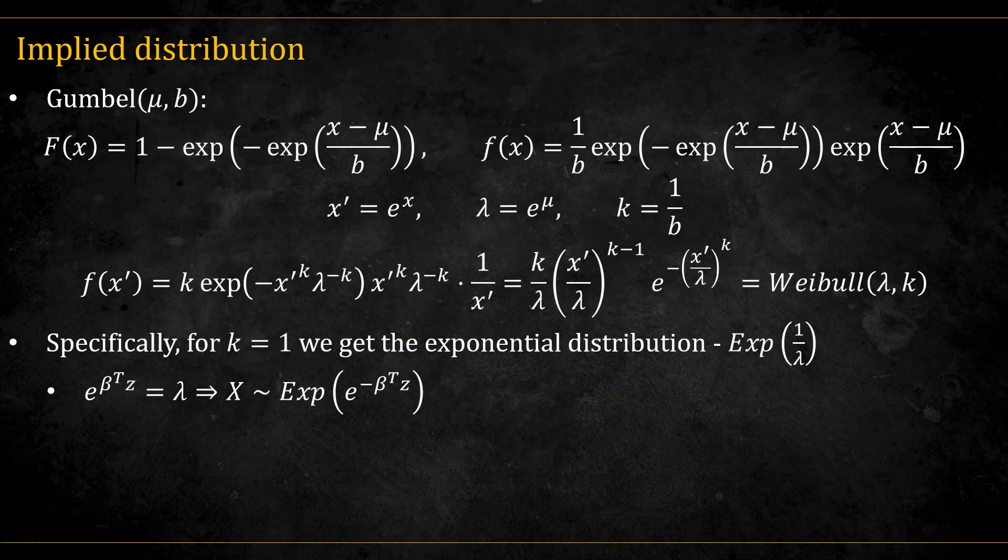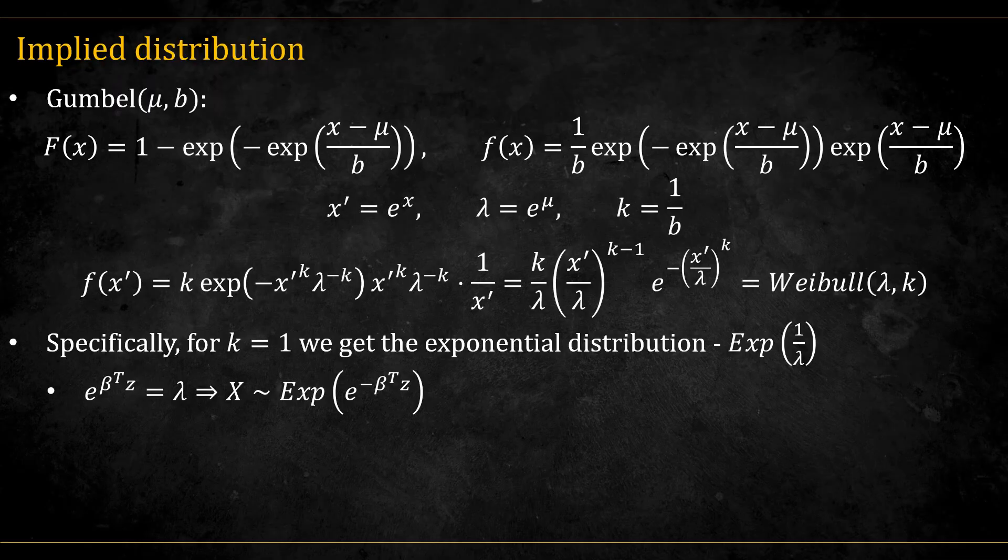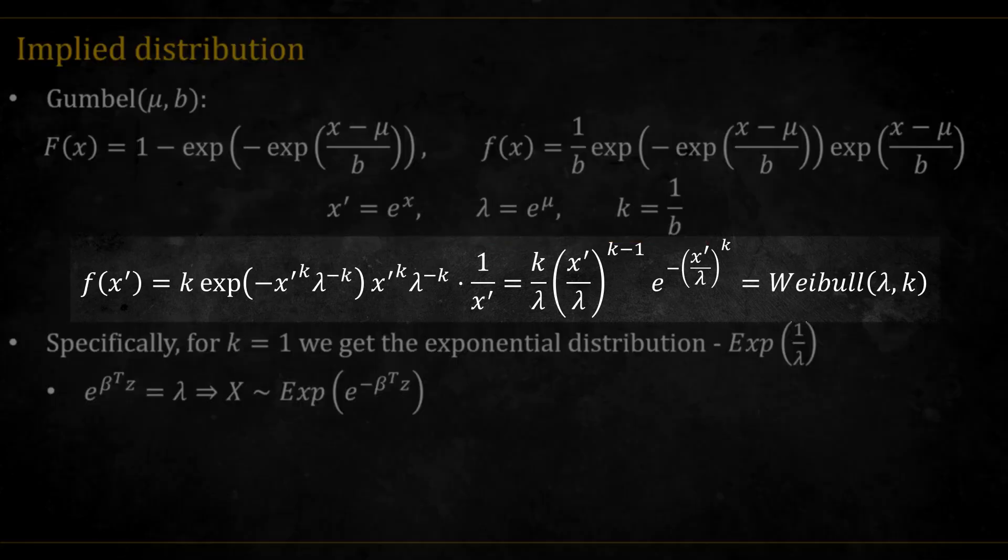Let's move to the Gumbel distribution. These are the CDF and PDF of the Gumbel. Note that this is the minimum extreme value variation of the Gumbel distribution. There is also the maximum extreme value, where we need to transform x to minus x. The Wikipedia definition is of the maximum. If we change variables and transform the parameters, we get the following PDF, which is equal to the Weibull PDF.